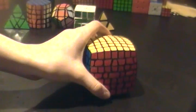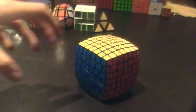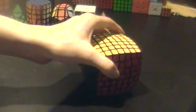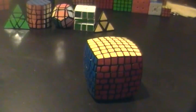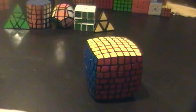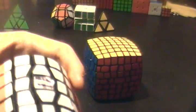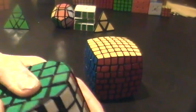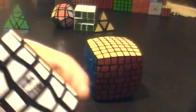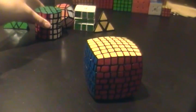So the puzzle, this puzzle, it was made out of a YJ 7x7. And the reasons for that is it's tensionable, it's not that expensive. And I found that if you mod YJ cubes, like this 5x5 barrel, they actually react very well to modding.